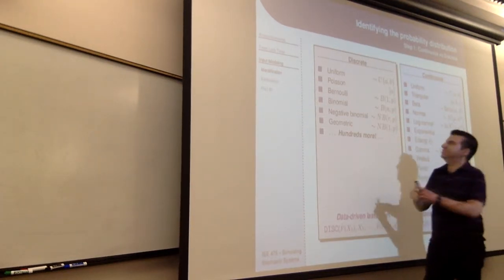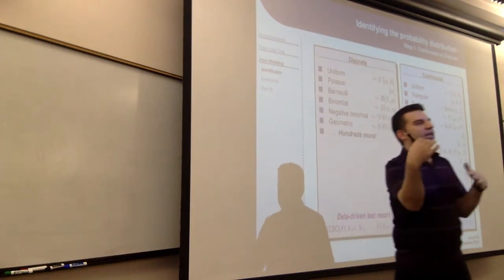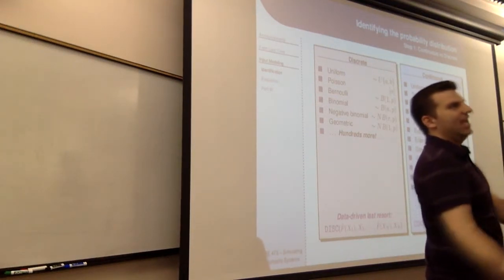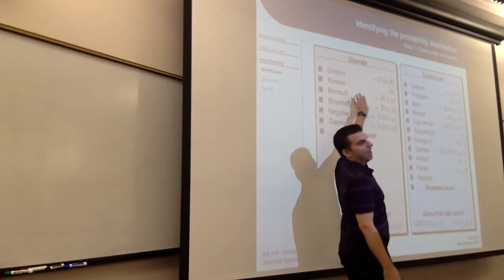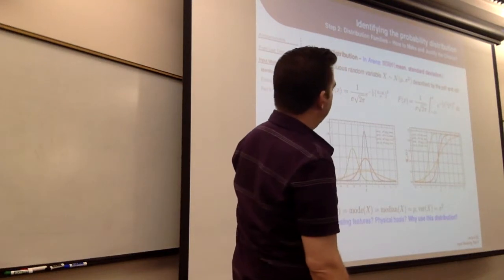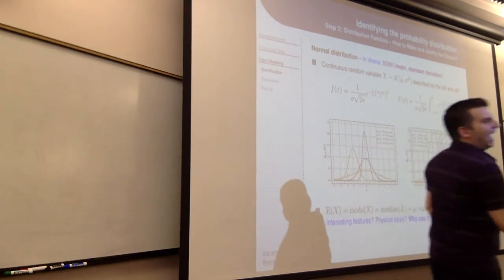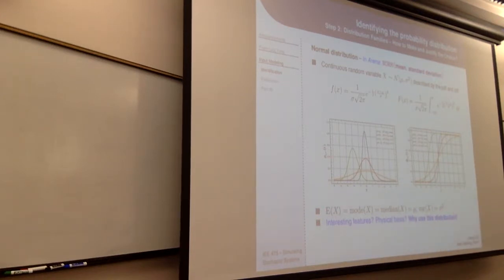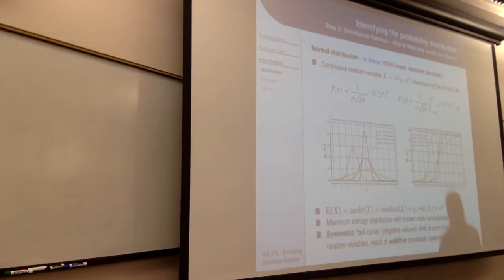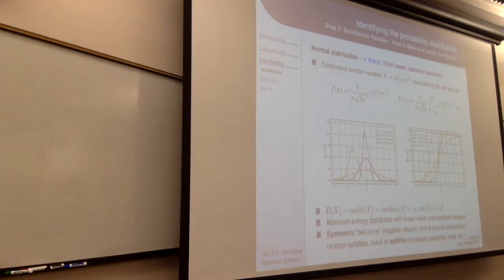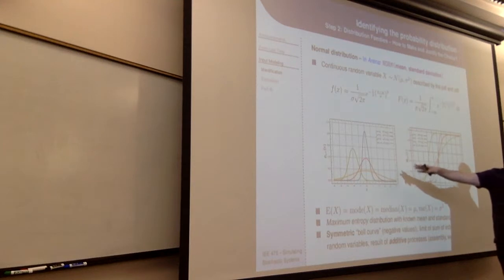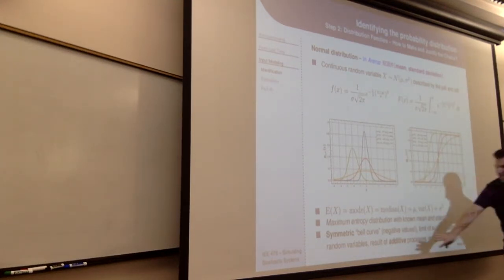Reviewing four common distributions: NORM in Arena uses mean and standard deviation as parameters — it's the symmetric distribution for additive processes. Think: additive → normal. The exponential is the classic inter-arrival and sometimes service time distribution; if something is non-negative and you know only the mean, exponential is the most unbiased choice. It's always positive, memoryless, and its mean equals its standard deviation with a single parameter.